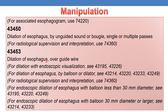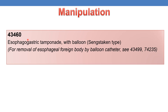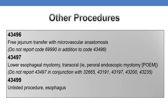CPT 43460 is esophagogastric tamponade with balloon. Coming to other procedures: CPT 43496 deals with free jejunum transfer with microvascular anastomosis. Do not report code 69990 in addition to code 43496.